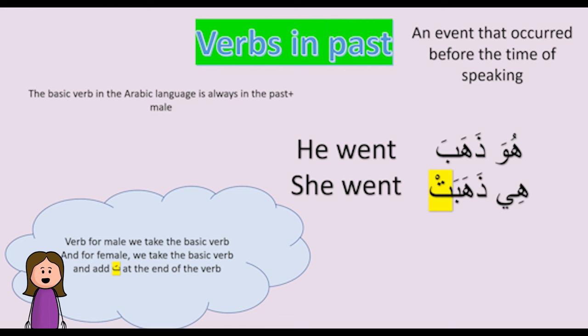All these verbs are used for male and happened in the past. So how do you say 'he went' in Arabic? You use the pronoun referring to 'he,' which in Arabic is هو. So: هو ذهب — for the pronoun هو we use the basic verb without any addition.